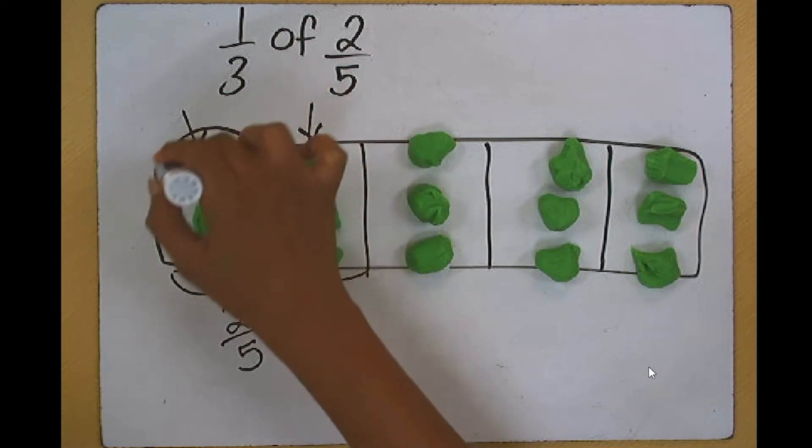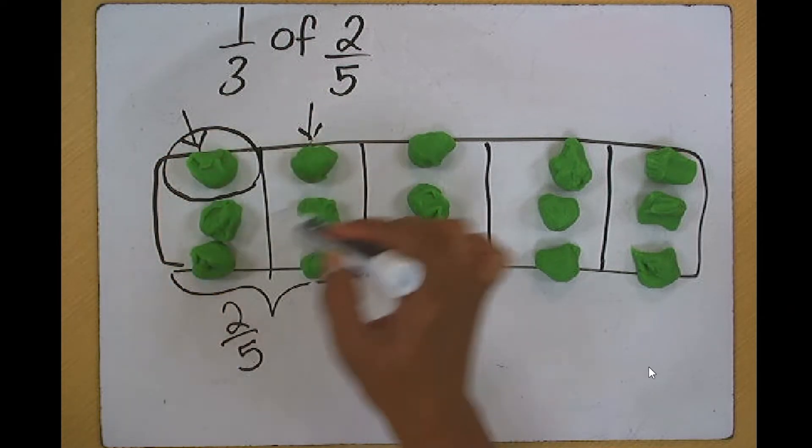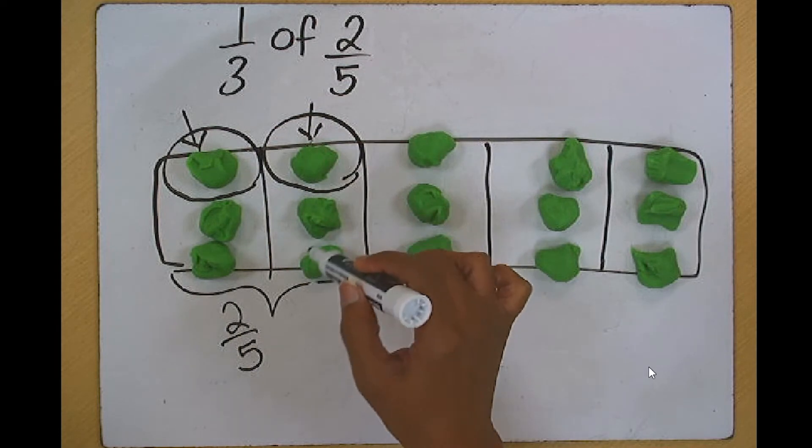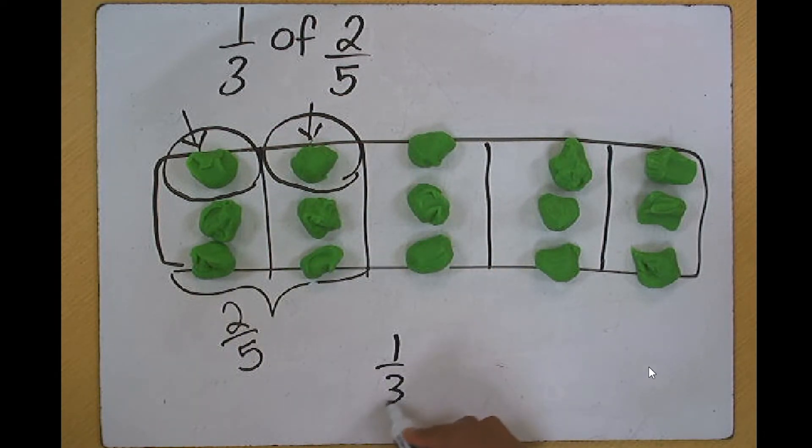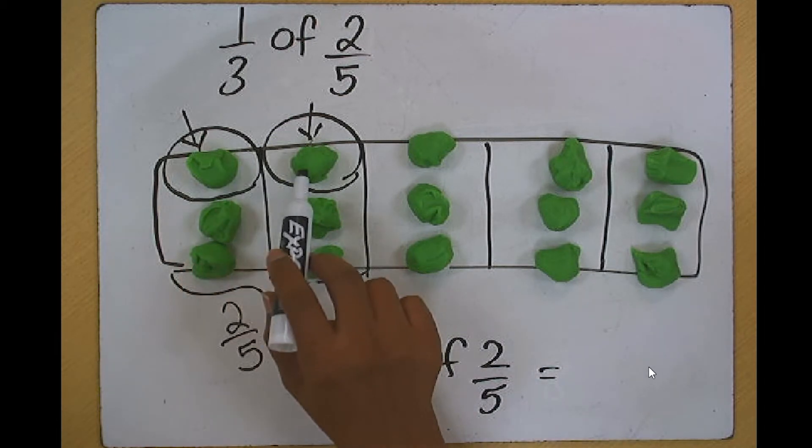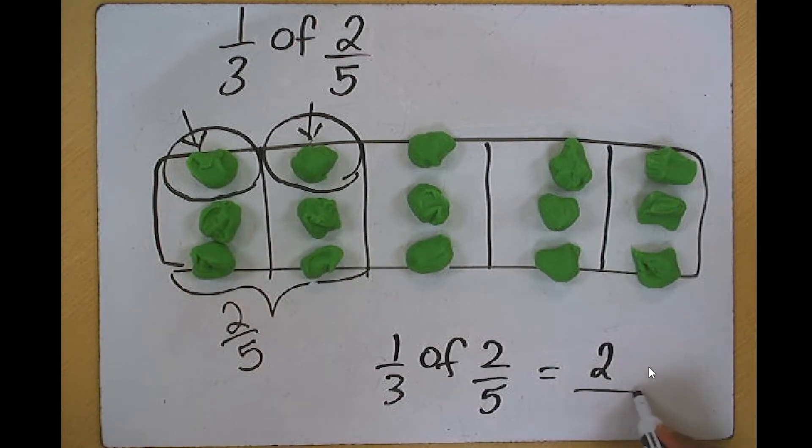this is our one-third of this segment, and this is the one-third of this segment, which means when we need to find one-third of two-fifths, we are looking at two pieces out of the 15 total pieces. So one-third of two-fifths is nothing but two-fifteenths.